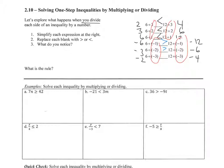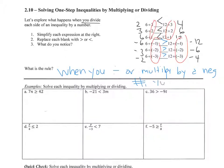And negative 2 is greater. So the rule is: when you divide or multiply by a negative number, you change the sense of the inequality. So you flip less than to greater than, or less than or equal to to greater than or equal to. You've got to flip them.